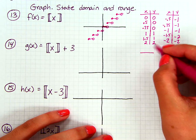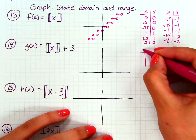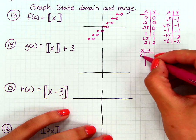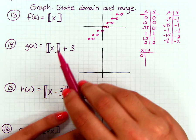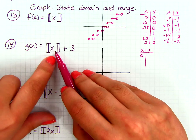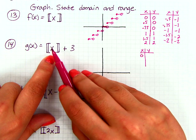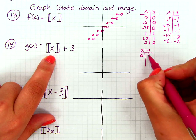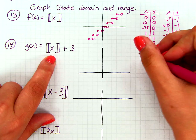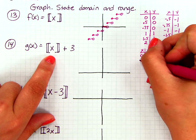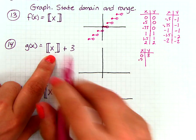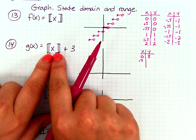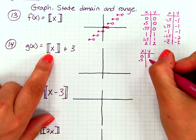To start, we're going to use a t-chart. I'll choose 0 for x — substituting in, we round to 0, then add 3, giving y = 3. Even if I choose 0.5, when I substitute in I round down to 0, and 0 + 3 is still 3.